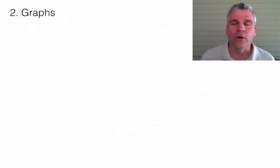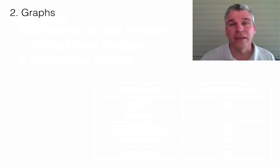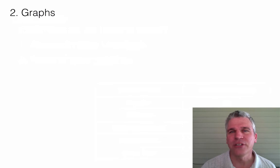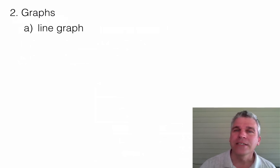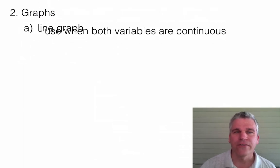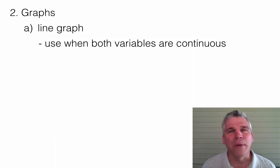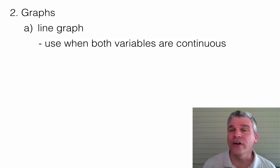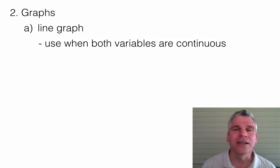The other way that we can organize our data is by making graphs. There are lots of different types of graphs out there. We're going to focus on making three different types this year, primarily. One is the line graph. How do we know when to make each of these different types of graphs? Well, it depends on our data. We make a line graph when both of our variables — our independent and our dependent — are continuous.